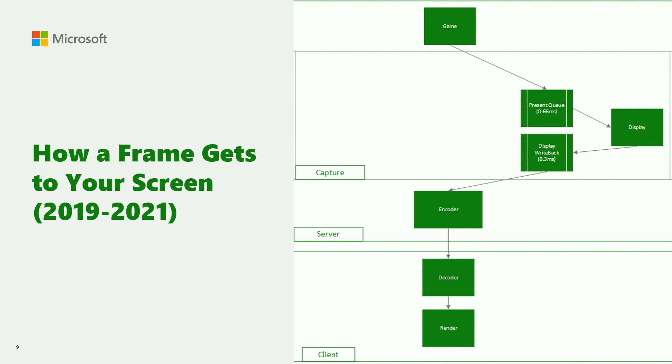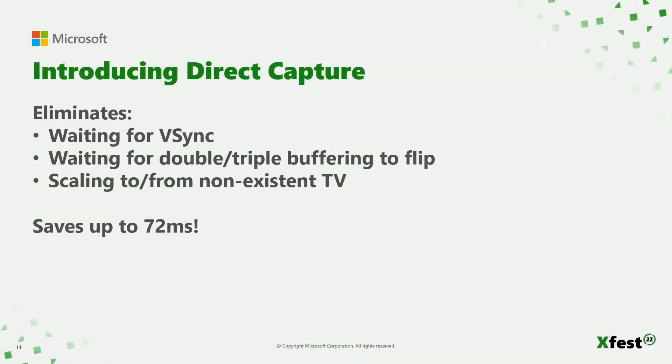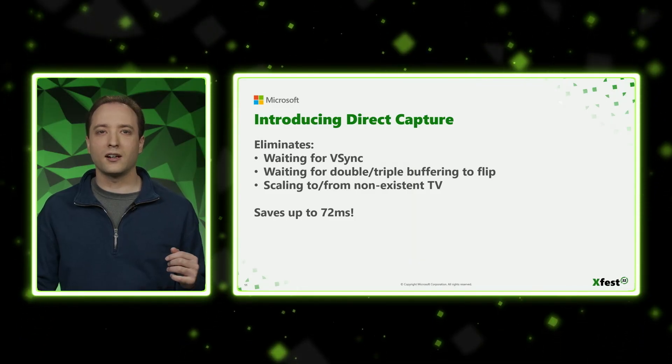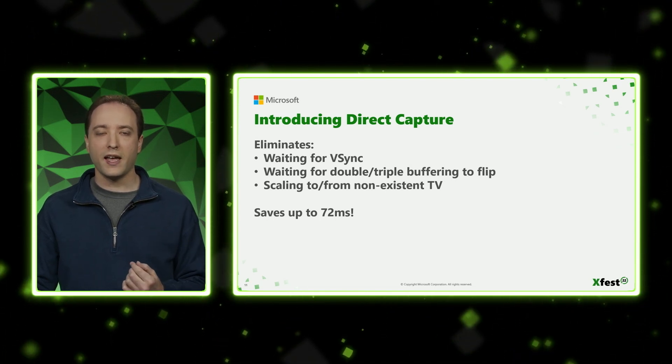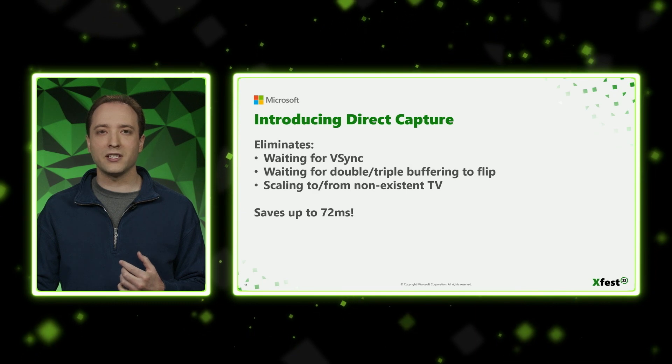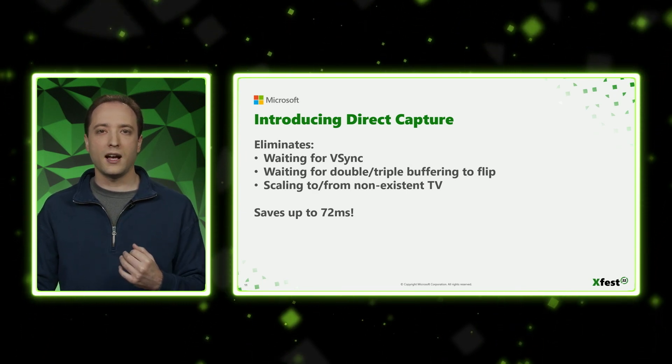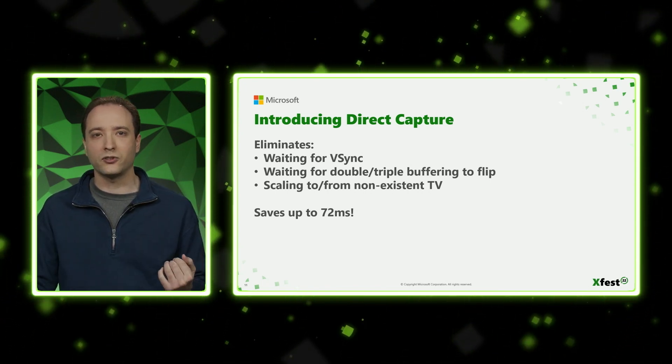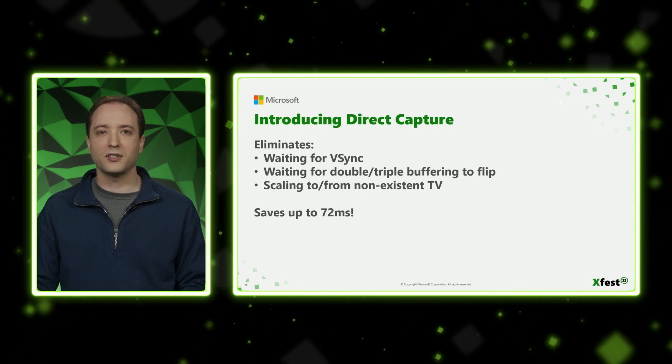So as you might guess, that's a pretty good amount of latency. What we've recently added is a direct capture path. The idea here is if a frame is compatible with direct capture, it can go through a software implementation of all of those hardware features. And it's a whole lot faster — somewhere in the two to 12 millisecond range instead of all that time on the right. So what's happening with direct capture? First, we're eliminating waiting for vSync on a TV that is not plugged into an Xbox console in a data center. Second, we're getting rid of any waiting around on double or triple buffering to flip. We're also not scaling to and from that TV — normally scaling to 1080p, 1440p, or 4K and then scaling back down to stream resolution. We can skip all of that, and in the end, we can save up to 72 milliseconds.